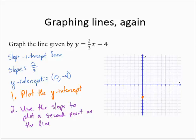Since the slope is two-thirds, I can think of that as a rise of 2 and a run of 3. So from the point that I've already plotted, rise 2 units, run 3 units, plot a second point on the line. And now draw the line through the two points.